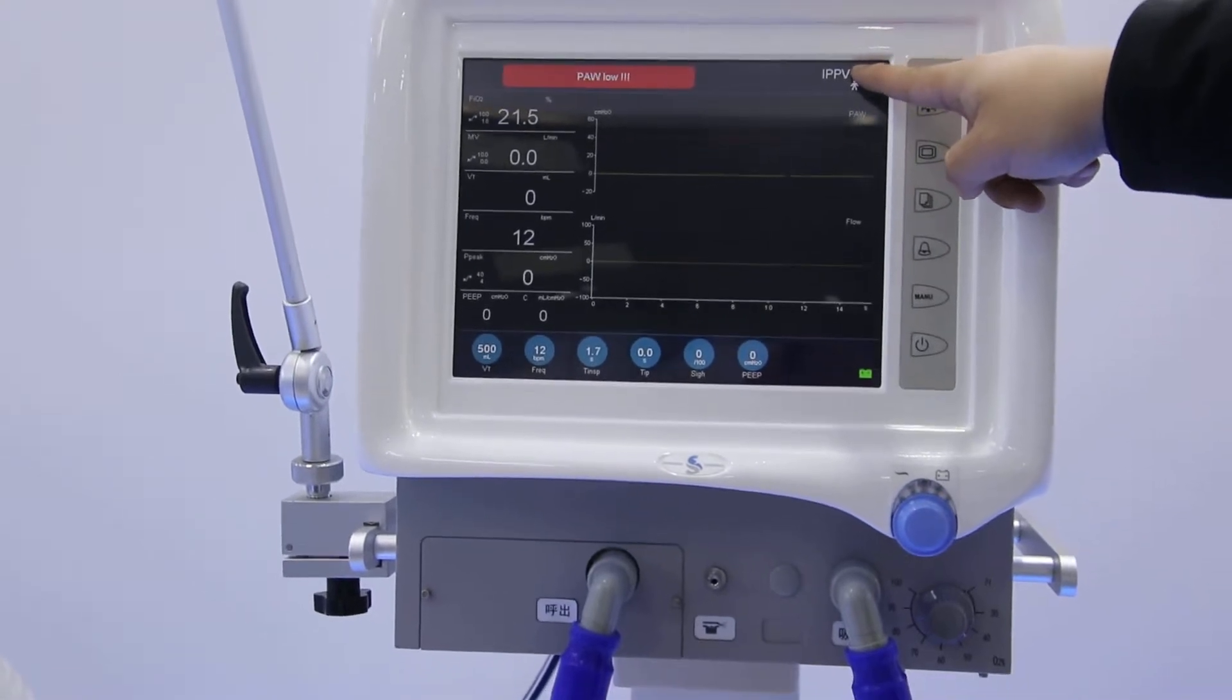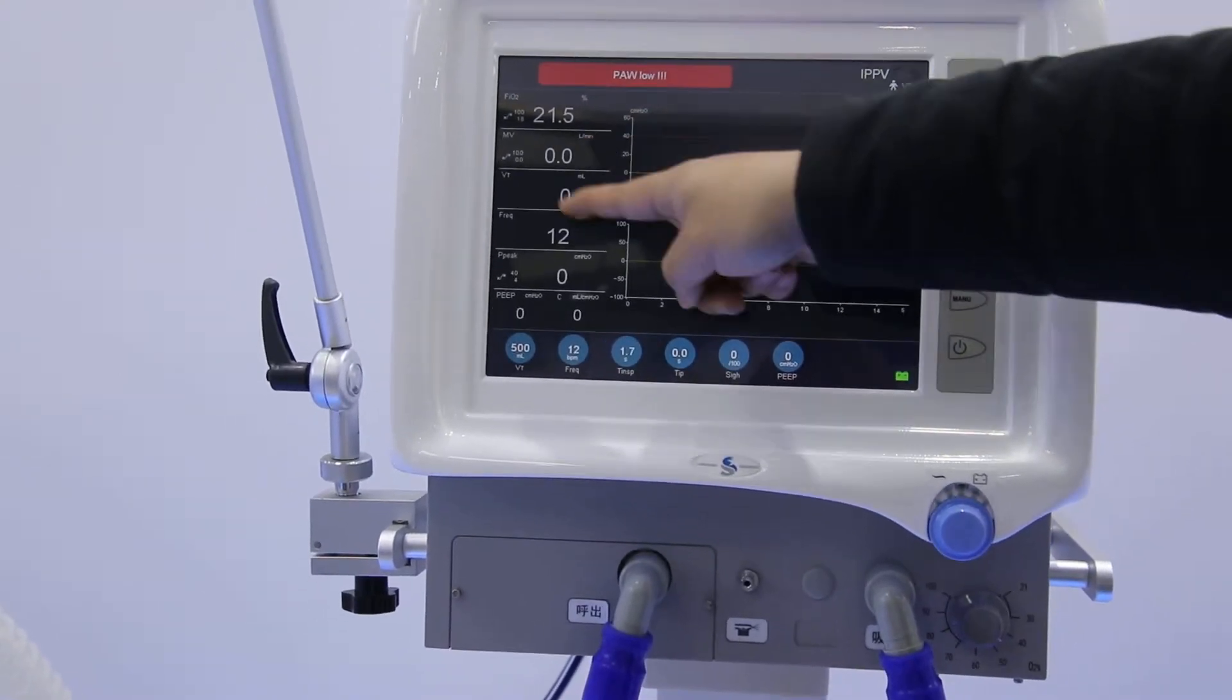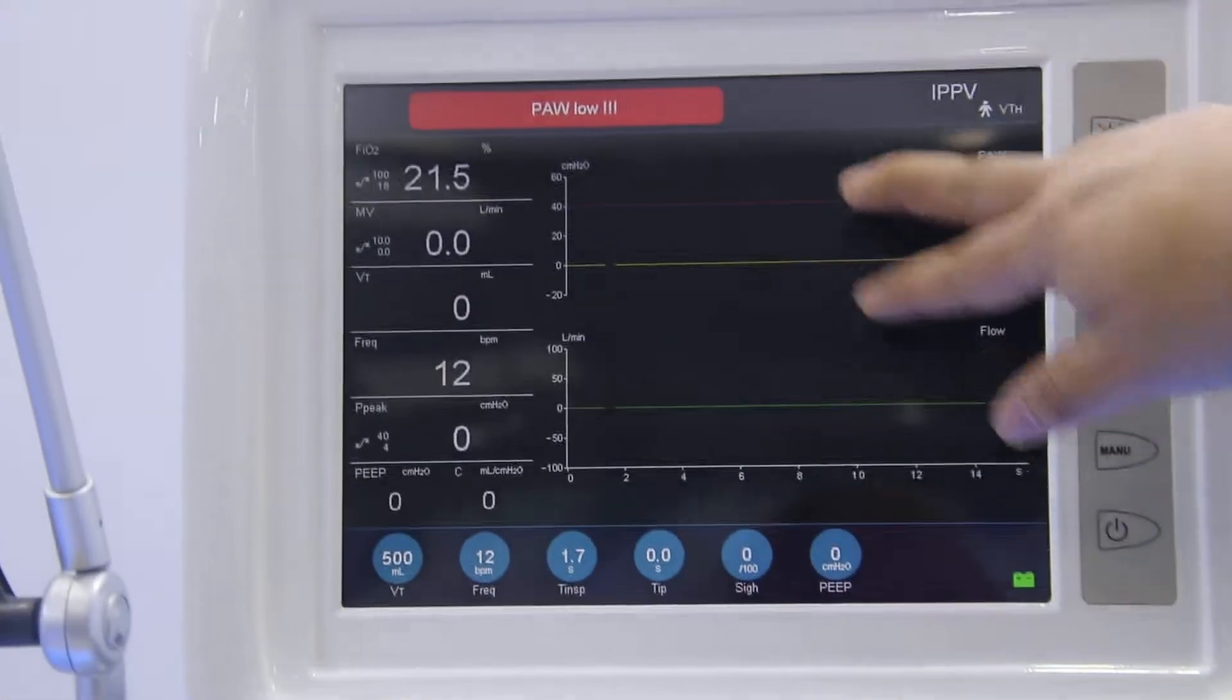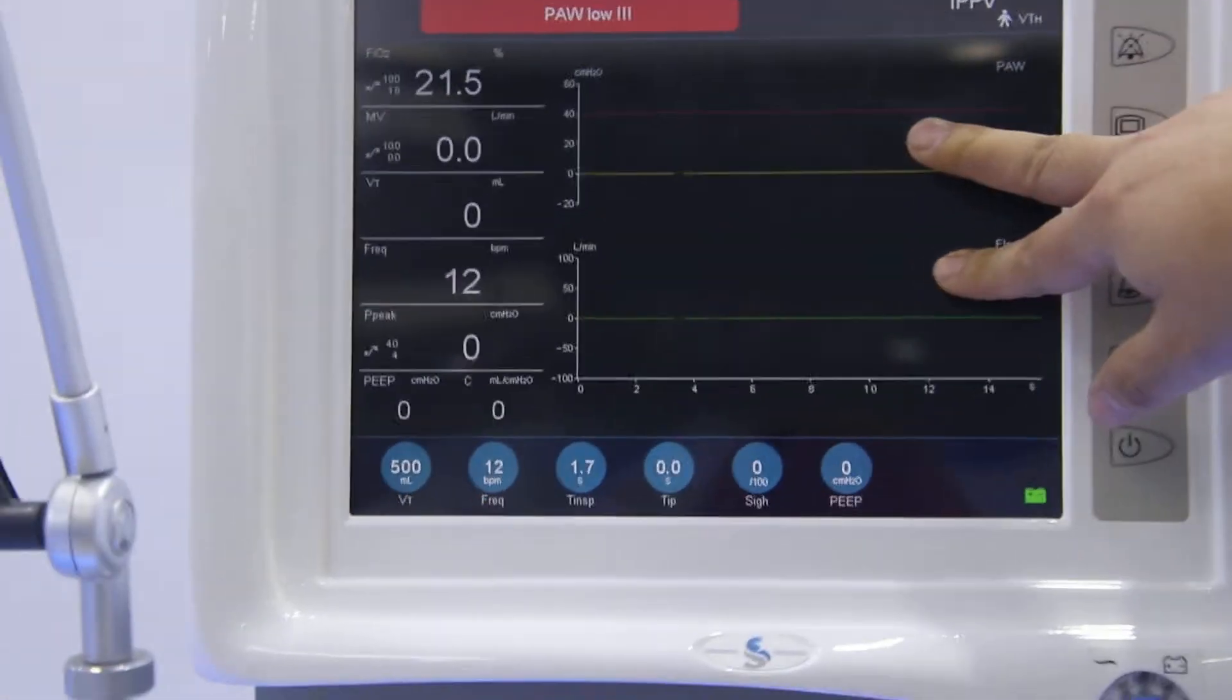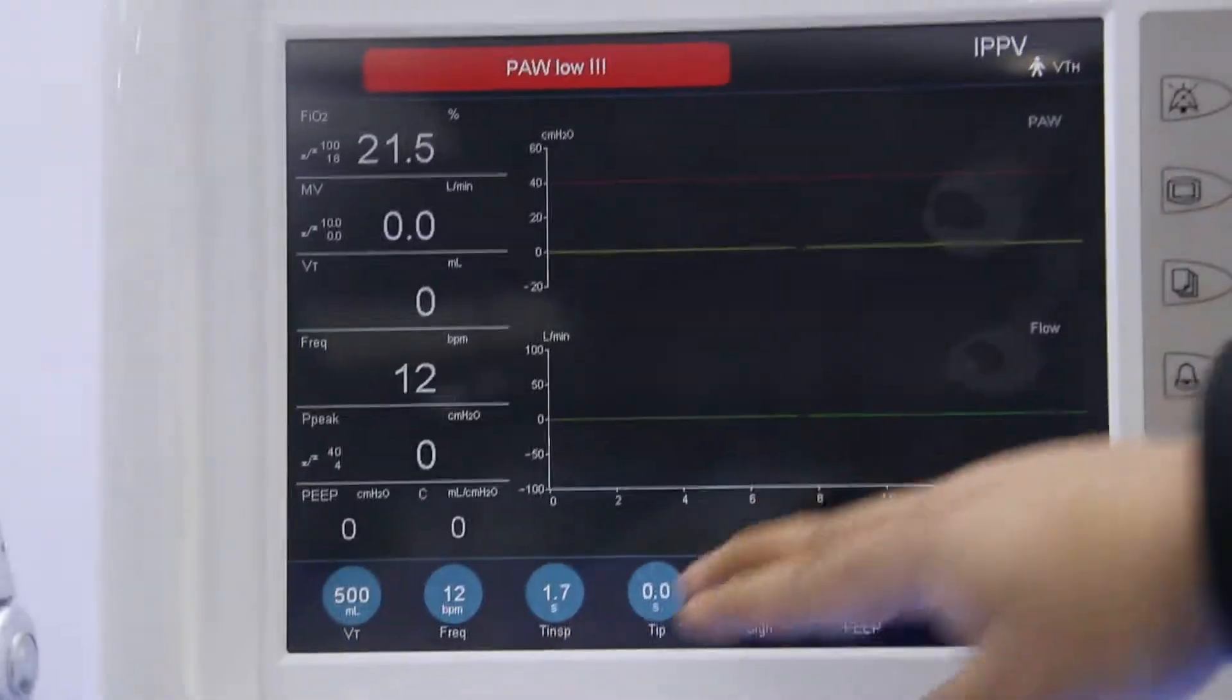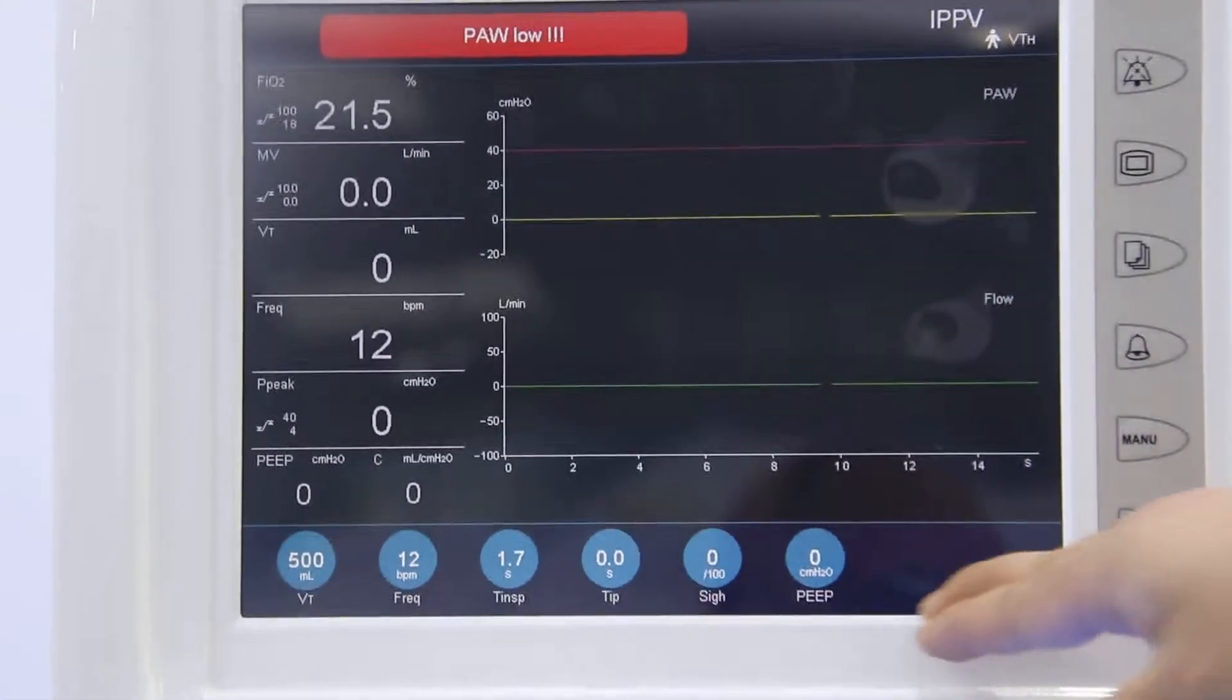And here is the ventilation mode we are choosing now. On the left side here is for the monitoring parameters. And the right side here, we have two waveforms for synchronous display shown on the screen. And each one of them you can choose for the loop. On the below side here is the adjusting area.